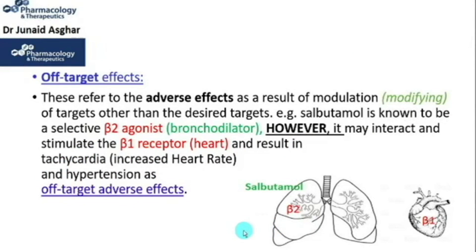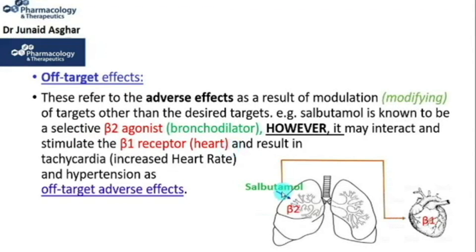If you have some background in adrenergic physiology and pharmacology, there are two main types of beta adrenergic receptors: beta-1 receptors and beta-2 receptors. Beta-1 receptors are present in the heart, whereas beta-2 receptors are located in the lungs. Salbutamol is a selective beta-2 adrenergic agonist used as a bronchodilator in asthma, and it is 29 times more selective for beta-2 receptors than for beta-1 receptors.